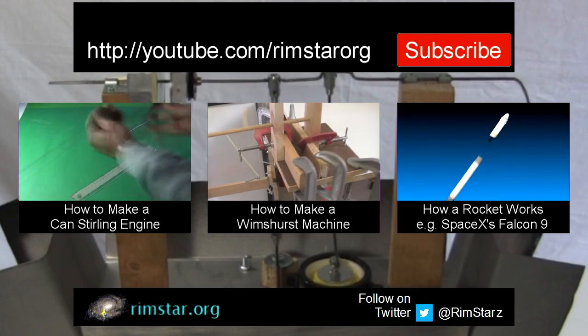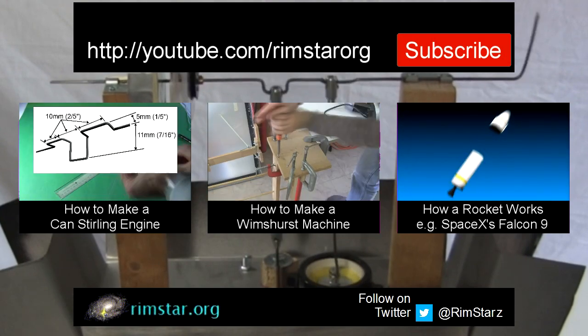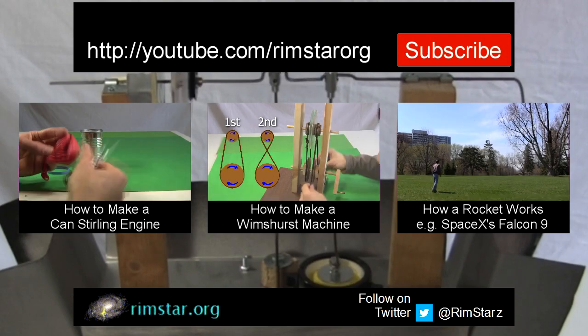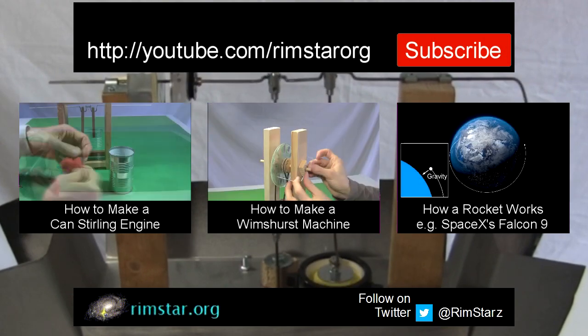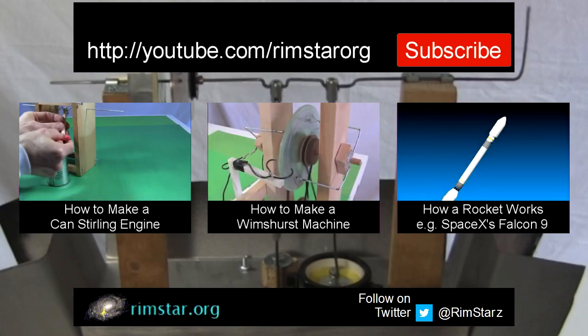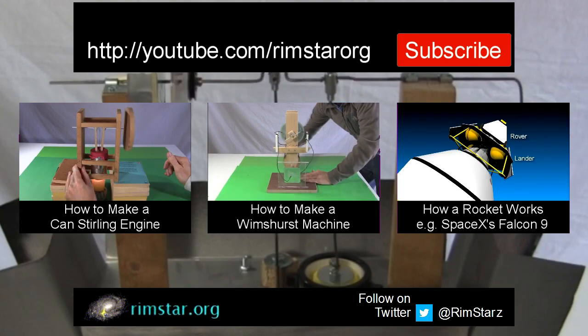Another on how to make a Wimshurst machine, showing it step-by-step, and for variety, how a rocket works to get from Earth to space, using SpaceX's Falcon 9 as an example. And don't forget to subscribe if you like these videos, or give a thumbs up, or leave a question or comment below. See you soon!